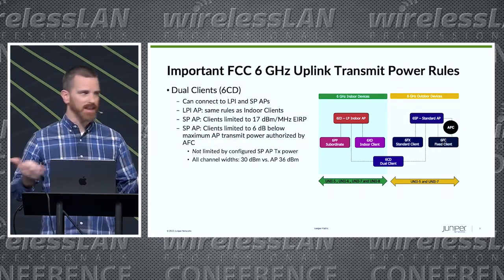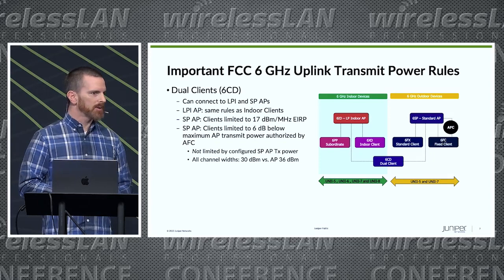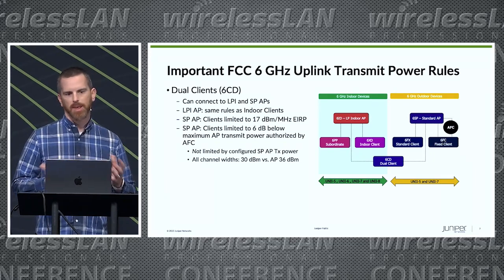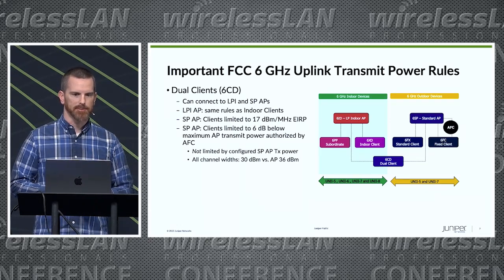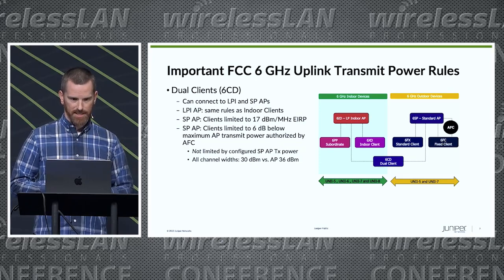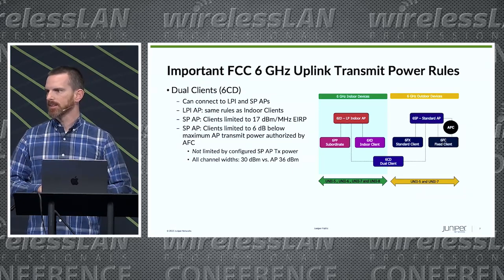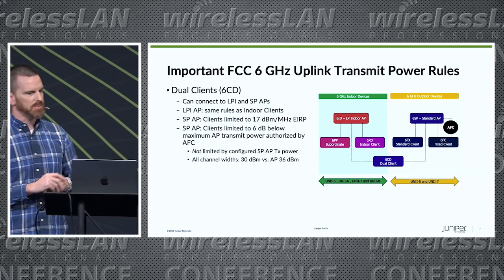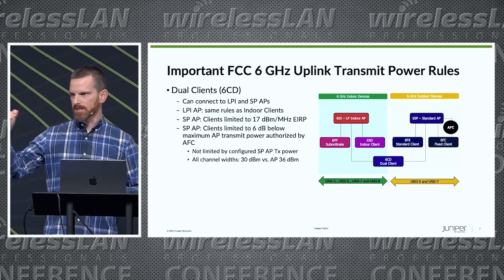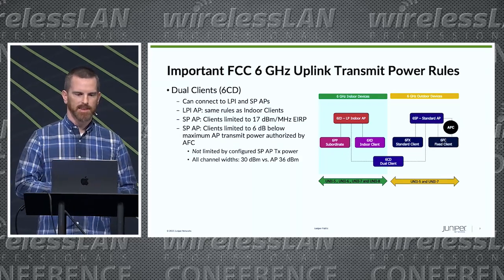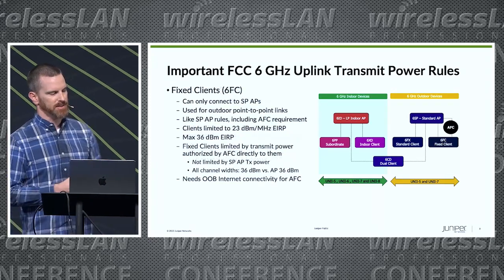Dual clients are what we want to have, because these are the clients that can connect to standard power. When they're connected to standard power APs, there's a good chance they won't have the same link asymmetry that we see with LPI APs. That's because they are allowed to transmit up to 30 dBm. Basically, the AP gets authorized a transmit power from the AFC, and a dual client can transmit 6 dB below that authorized power — so that can effectively mean not much of a limit at all.